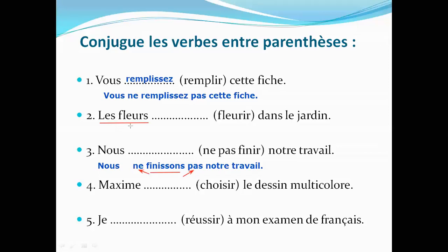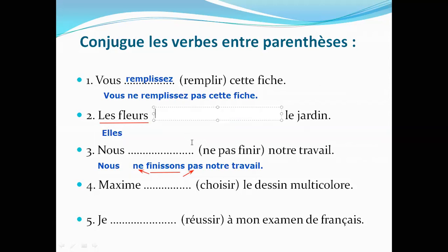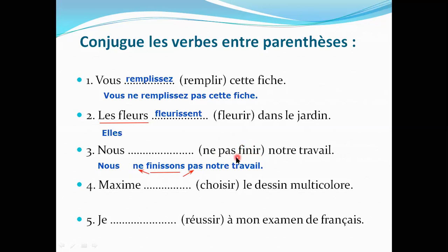The word 'fleur' in French is feminine, meaning 'flower,' so it is equivalent to 'elle.' The verb 'fleurir' conjugated for 'elle' is 'fleurit' (f-l-e-u-r-i-t). The word 'dans' means 'in' and 'jardin' means 'garden,' so: the flowers are blossoming in the garden. For the exercise with 'ne...pas,' you put the conjugation in the negative form: 'nous ne finissons pas.'